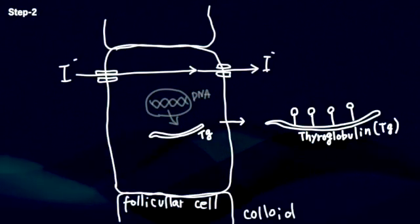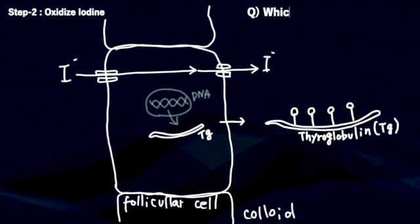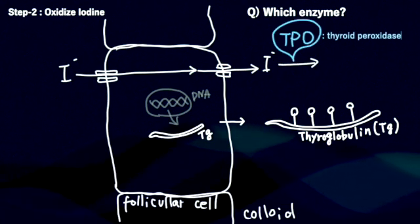Step 2. Let's oxidize iodine. Which enzyme is used? Correct. It's thyroid peroxidase, TPO.